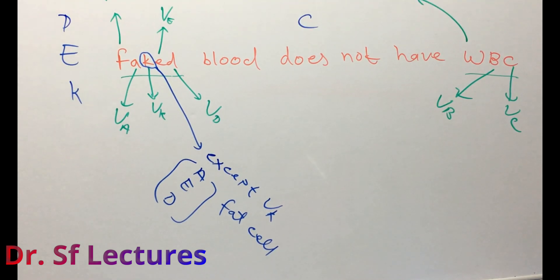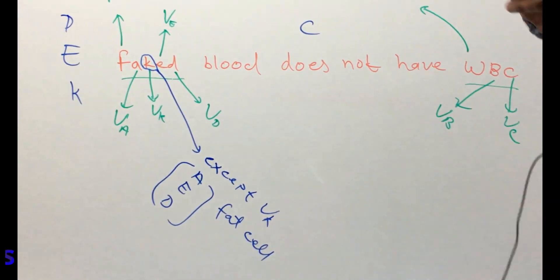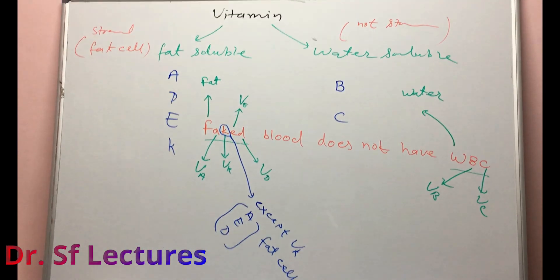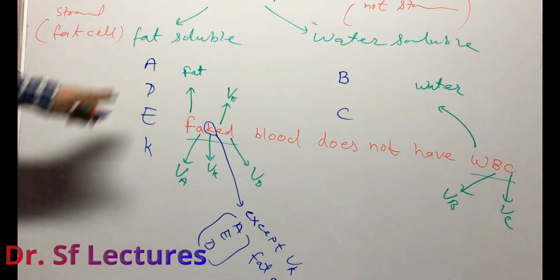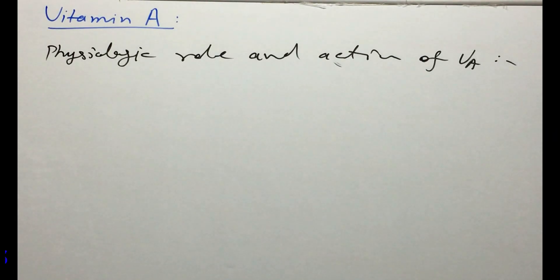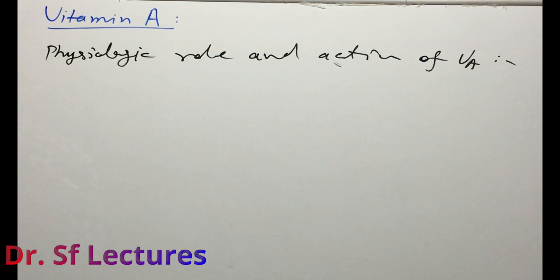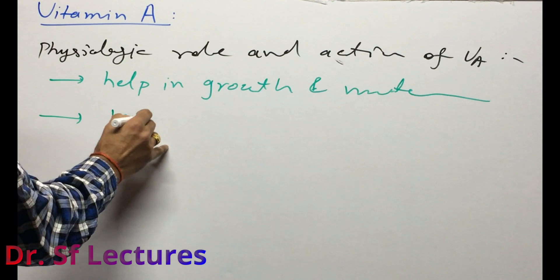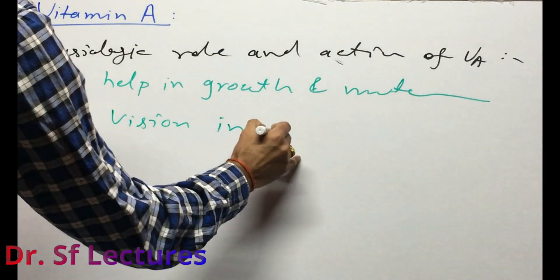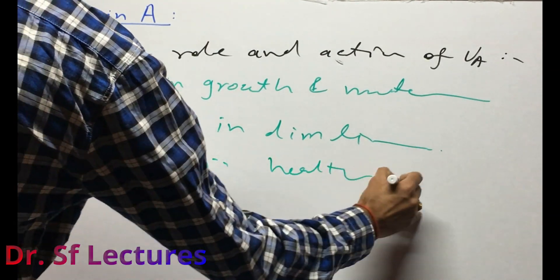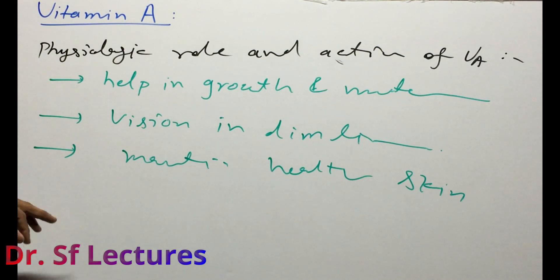Now we will discuss each vitamin step by step — its deficiency, causes, and excess. First, vitamin A: its physiological roles and actions. Vitamin A helps in growth and maturation. With the help of vitamin A we can see in dim light. Vitamin A also maintains healthy skin.